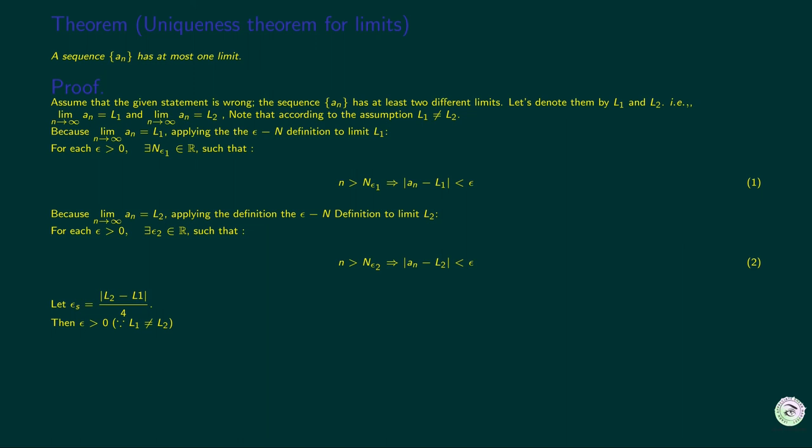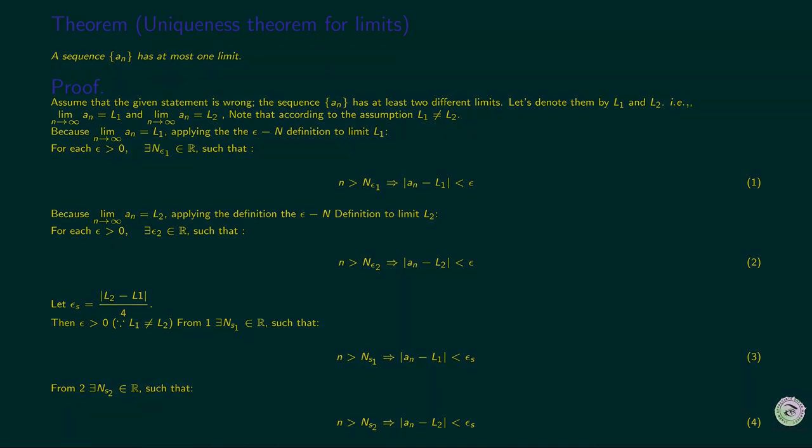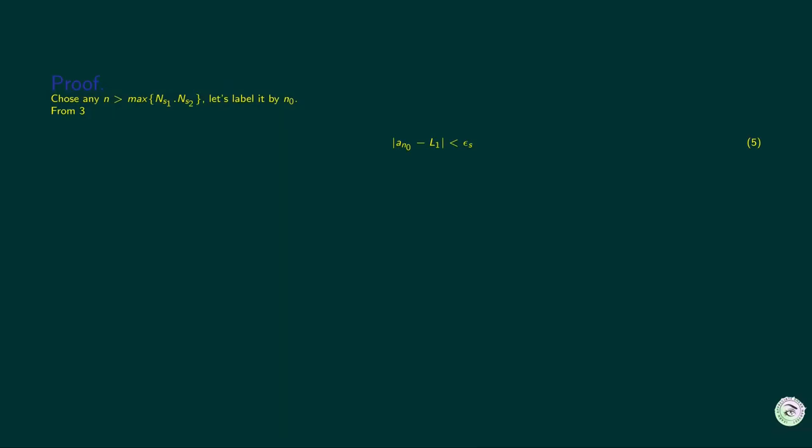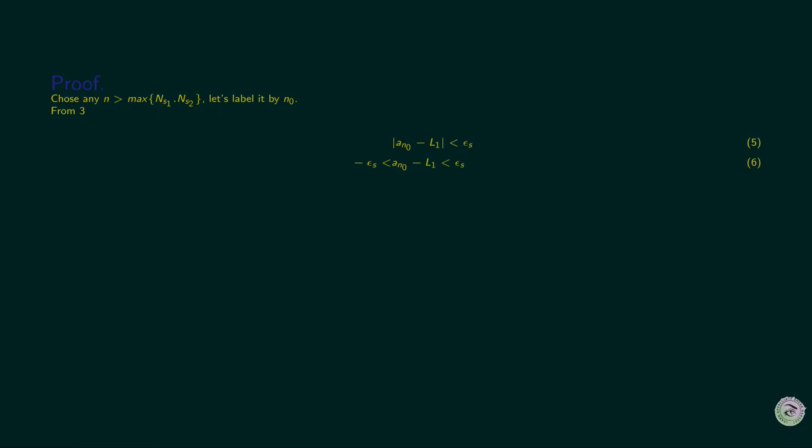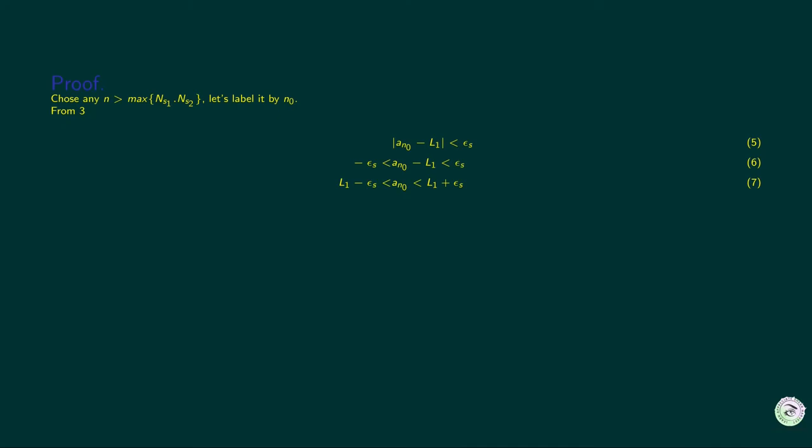The epsilon-N definition guarantees the existence of N values as in 3 and 4. Now we choose N value greater than both n_1 and n_2 and label it by n-naught. Since n-naught is bigger than n_1, a_n-naught satisfies inequality 5. We get to 6 by rewriting 5. Now adding l1 to all sides of 6 gives 7. Since n-naught is bigger than n_2, we get 8.